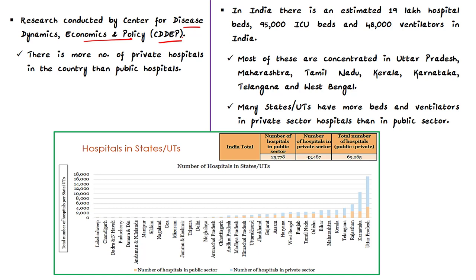Research by the Center for Disease Dynamics, Economics and Policy found that as of April 2020, there are more private hospitals in India than public hospitals. India has an estimated 19 lakh hospital beds, 95,000 ICU beds, and 48,000 ventilators, mostly concentrated in seven states: Uttar Pradesh, Maharashtra, Tamil Nadu, Kerala, Karnataka, Telangana, and West Bengal. Except for Tamil Nadu, West Bengal, and Delhi, more beds and ventilators are in private sector hospitals than in public hospitals.